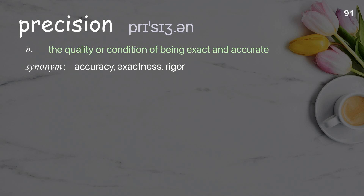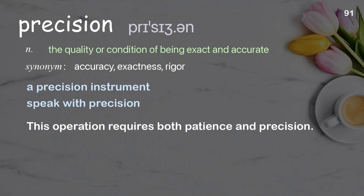Precision: the quality or condition of being exact and accurate. Examples: a precision instrument; speak with precision. This operation requires both patience and precision.